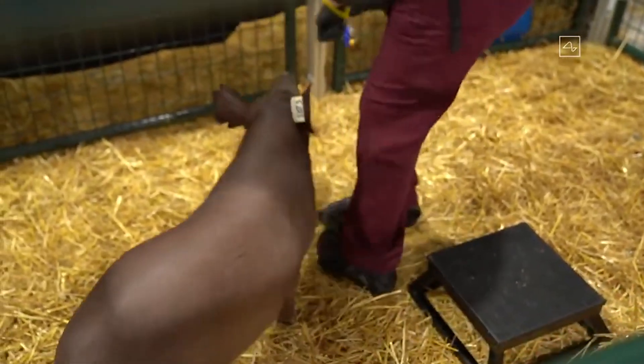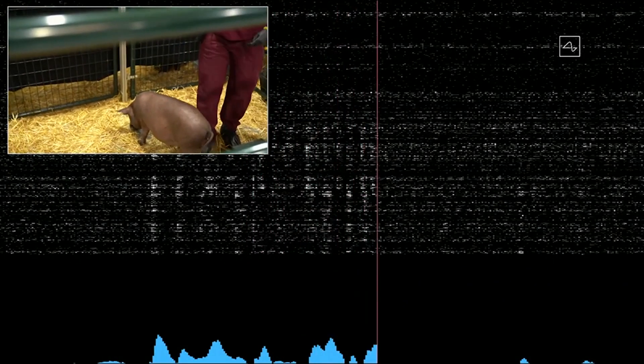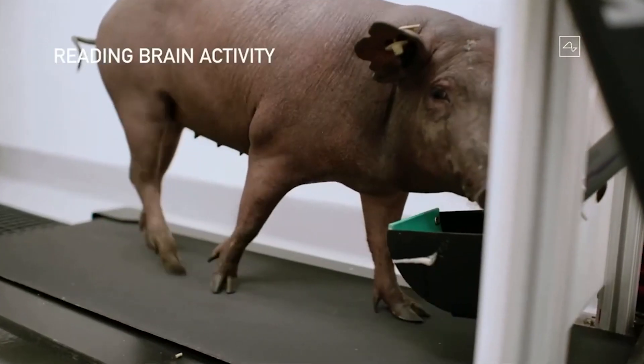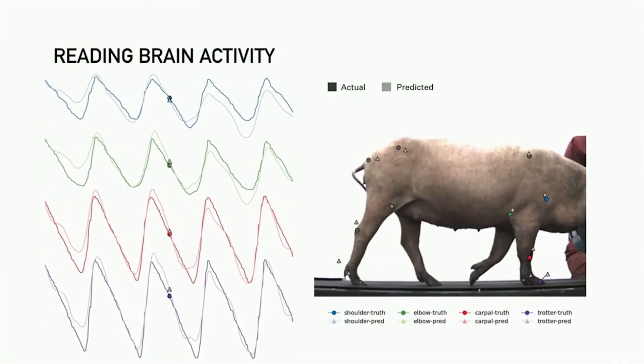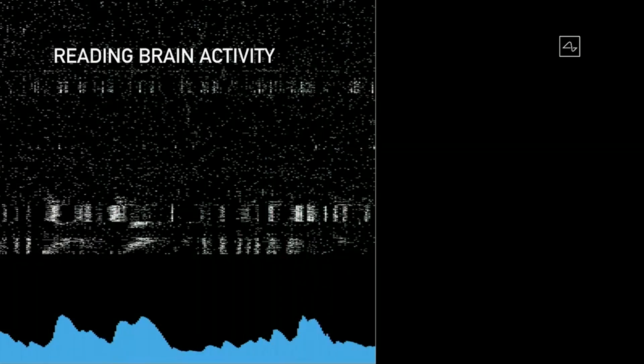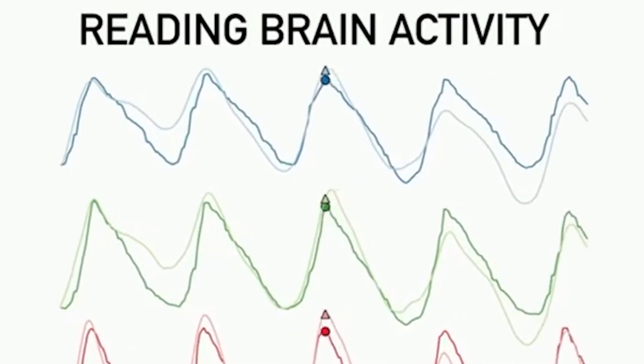One pig did not have a brain implant. The second pig had a link implanted and then had it removed without any issues. And the third pig, named Gertrude, had a chip inside his brain for two months. He behaved just like other pigs. The amazing thing was that we could see a live reading of the neurons in the pig's brain, firing electrical signals in real time. These signals were indicated by beeps.